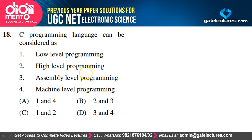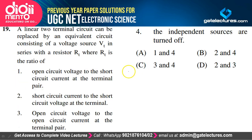C programming language can be considered as both a low-level programming language and a high-level programming language — statements 1 and 2 are correct. So option C is the correct option.